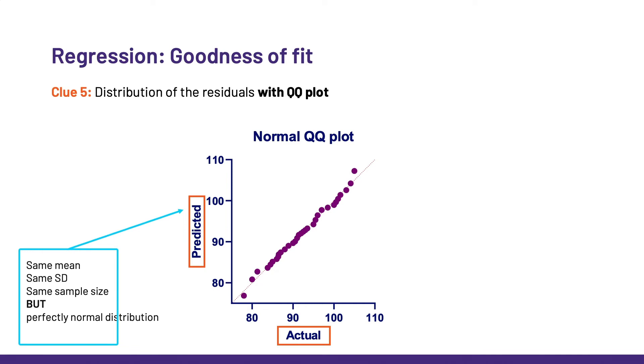By the way, QQ stands for quantile-quantile, and the quantile is about quantity. So it is the quantity or proportion of values that we expect to see at a certain place in the distribution or at a certain distance from the line of best fit. Pretty cool, right?